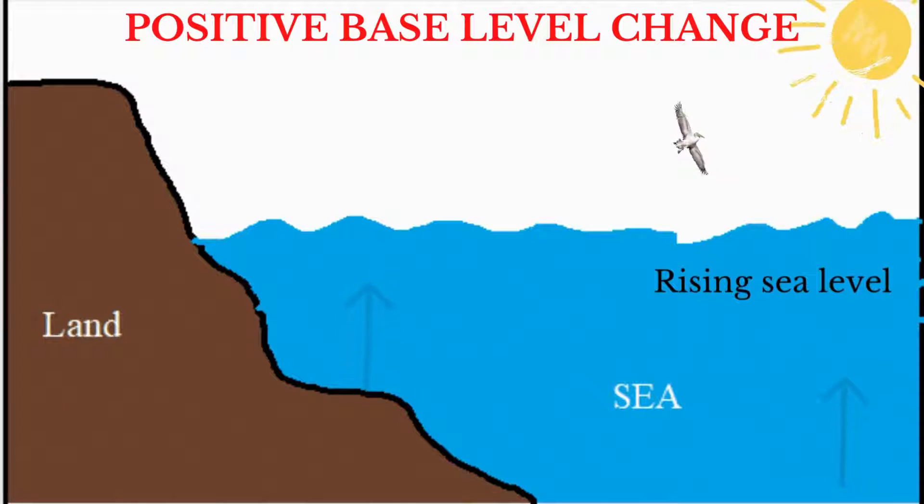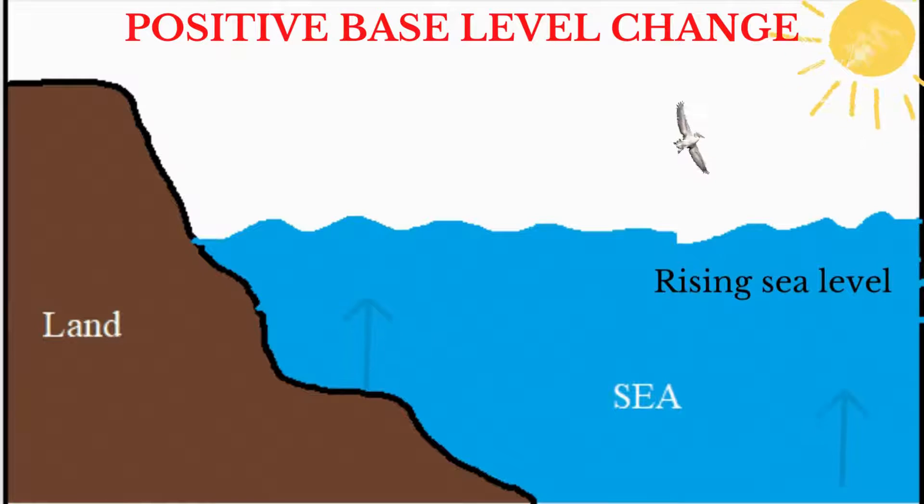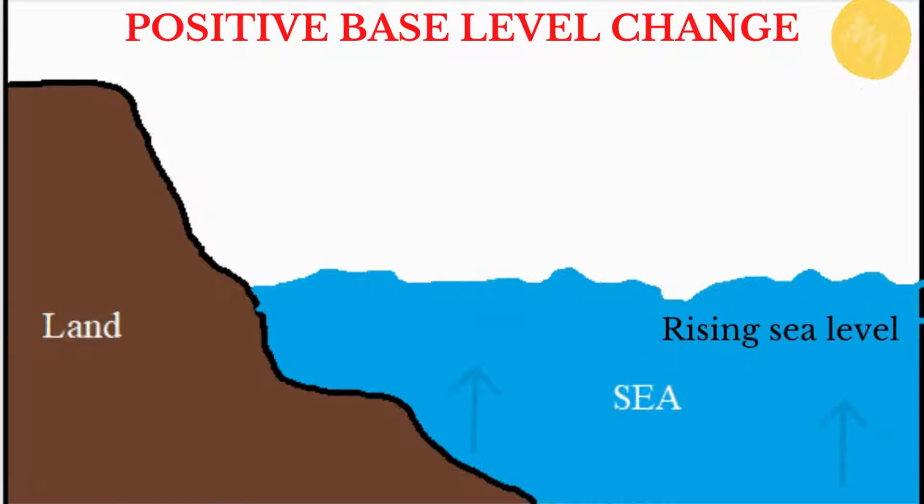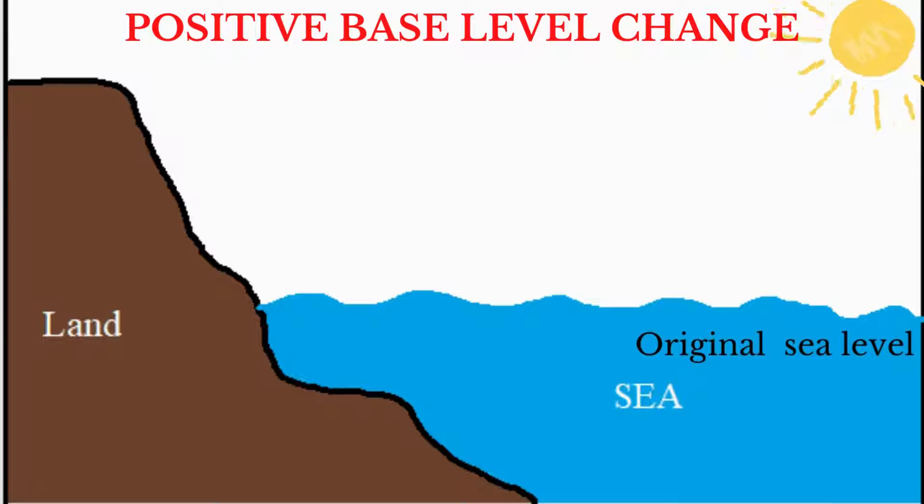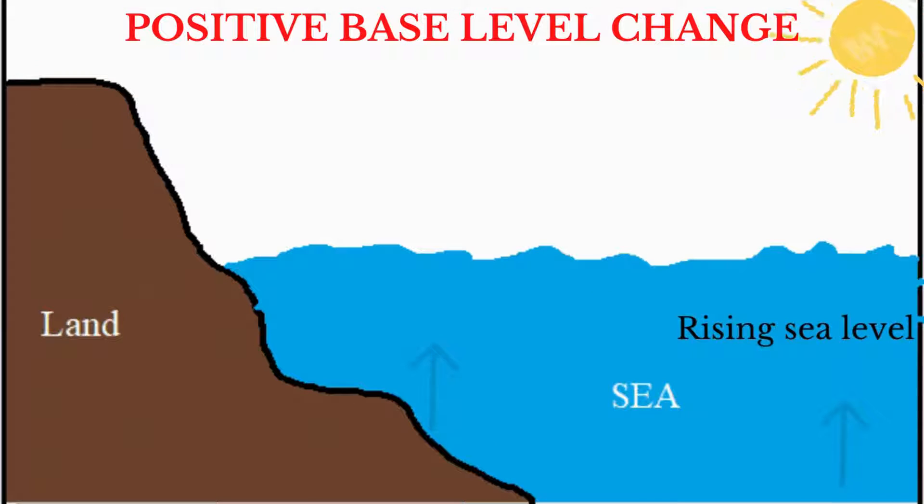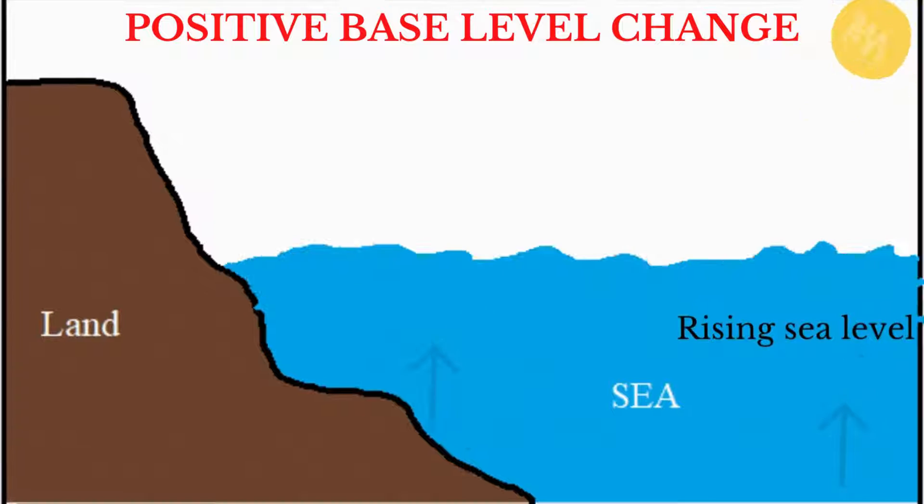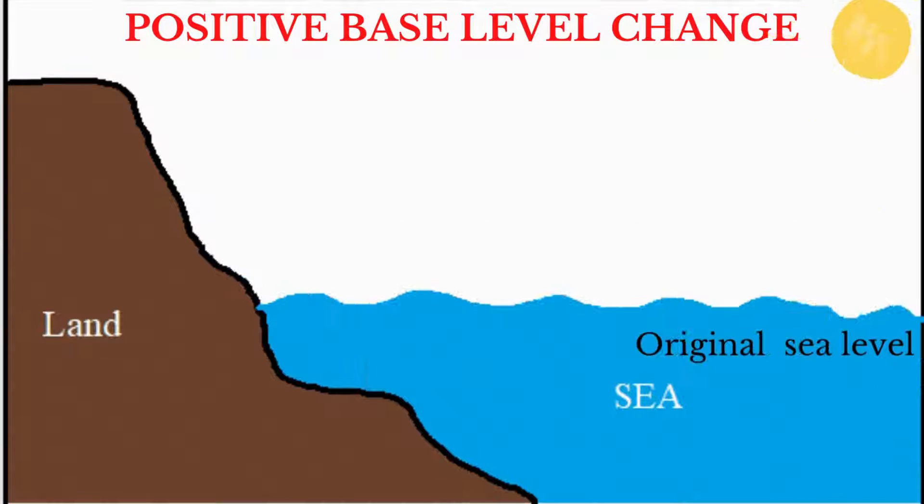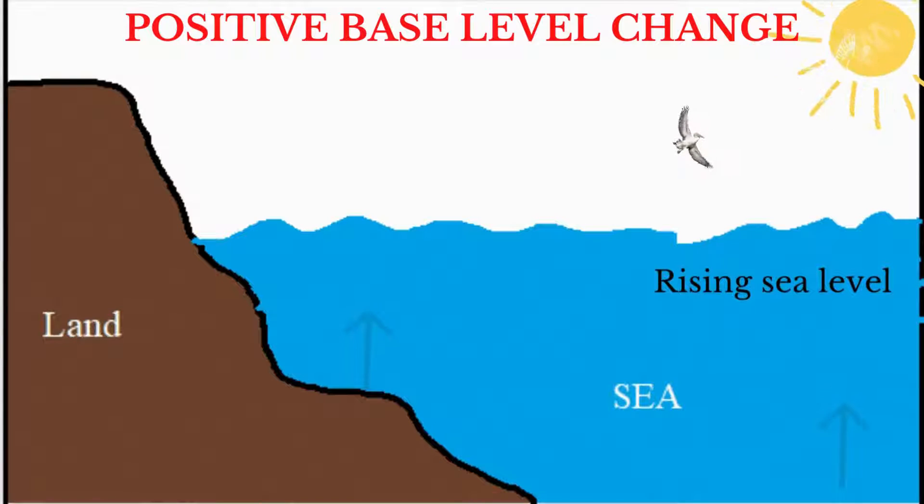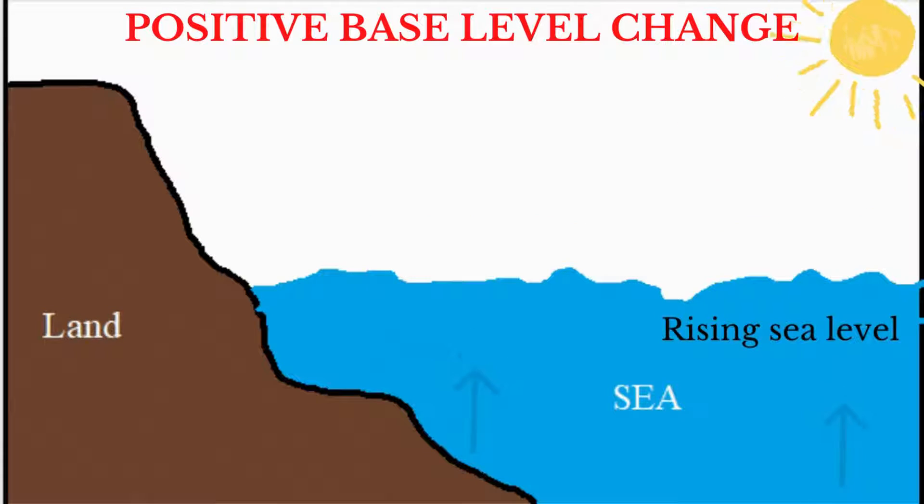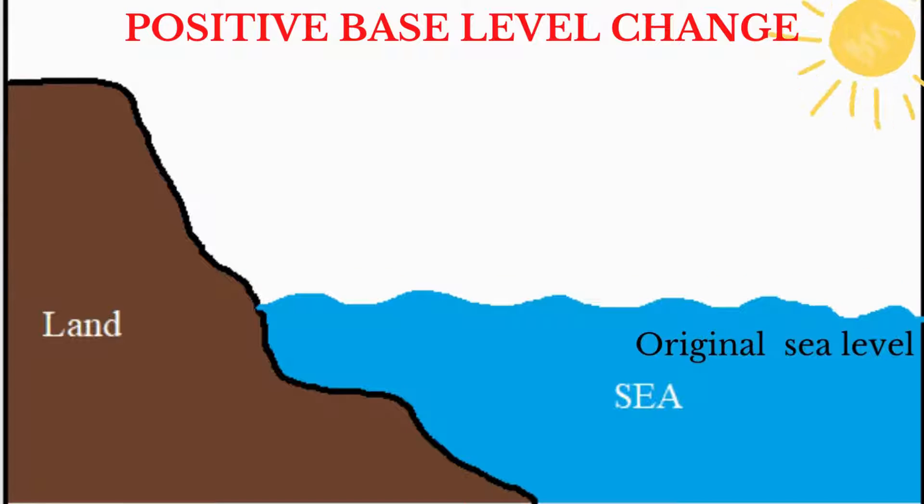Positive base level change is when sea level rises and the rise in sea level is greater than the land rises, or the land sinks in relation to the sea. This results in a decrease in the gradient of the river and a corresponding increase in the deposition and potential flooding of coastal areas.